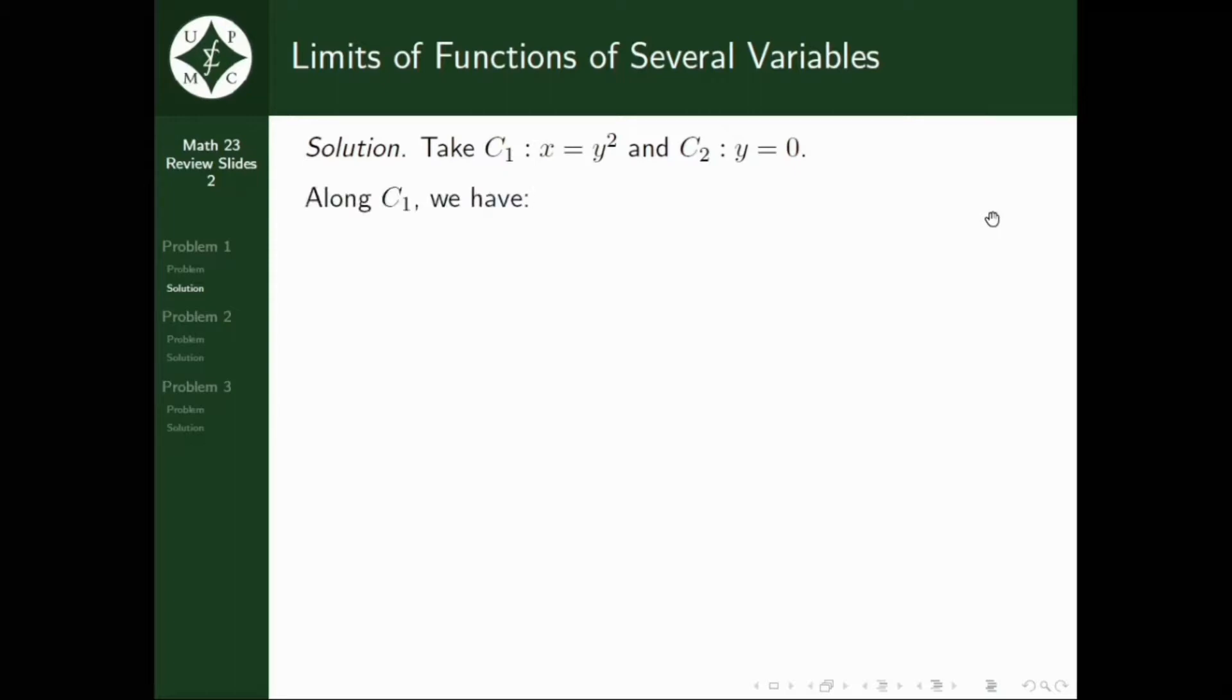So, along the first curve, we have, equal yan sa limit of Y to the fourth, cosine Y, all over 2 times Y raised to the fourth, as Y approaches 0, kasi, na-substitute na ito yung X equals Y squared. And further, simplifying, maka-cancel yung Y to the fourth. So, we will now have the limit of cosine Y all over 2 as Y approaches 0, and this is equal to one-half.